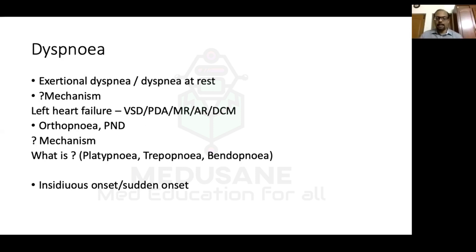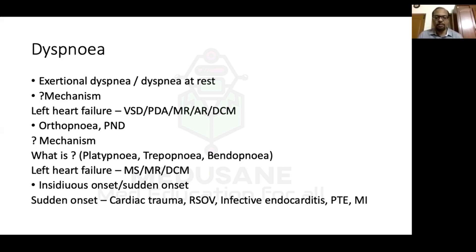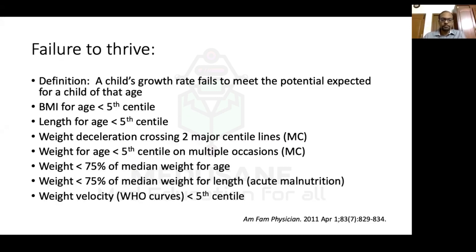Most dyspnea is insidious in onset, but causes of sudden-onset dyspnea include cardiac trauma, ruptured sinus of Valsalva, infective endocarditis with vegetation rupturing the mitral valve causing acute MR, pulmonary thromboembolism, and myocardial infarction. Failure to thrive occurs because the suck-rest-suck cycle leads to decreased caloric intake while cardiac failure and respiratory distress increase metabolism. This imbalance causes the child's growth to fail to meet the expected potential for that age.